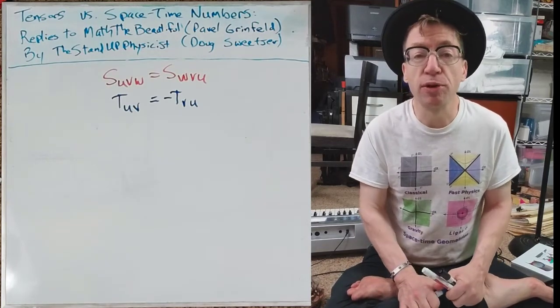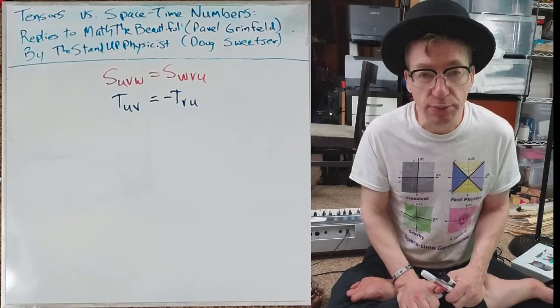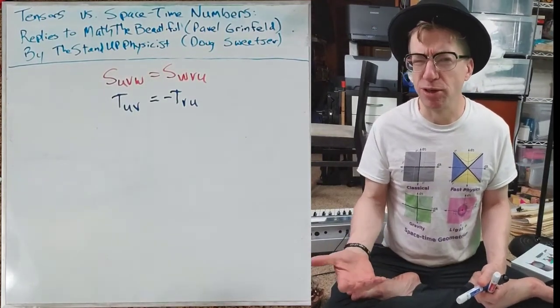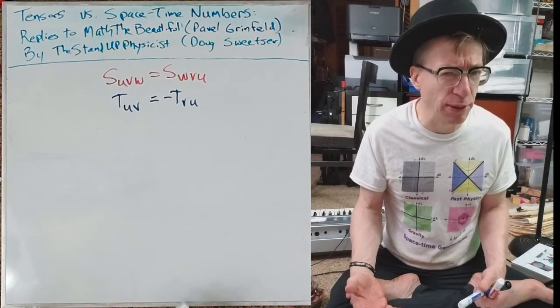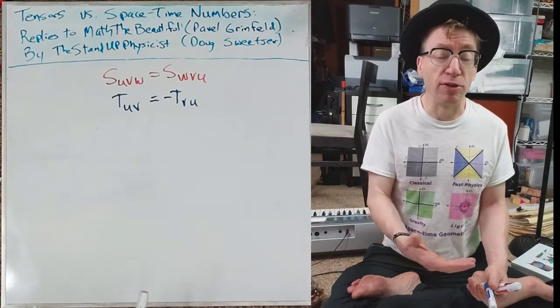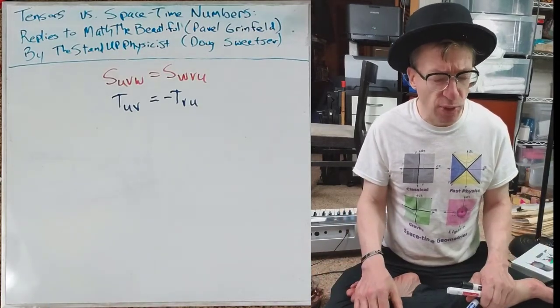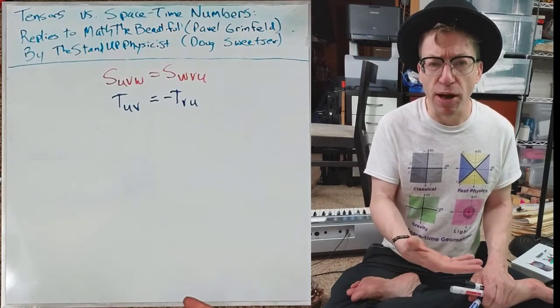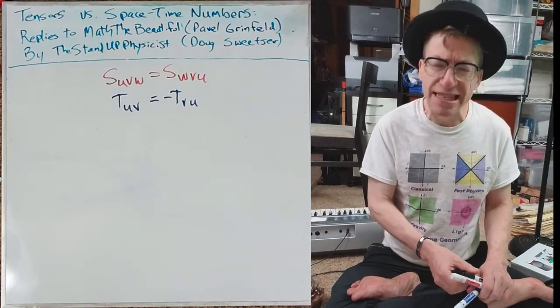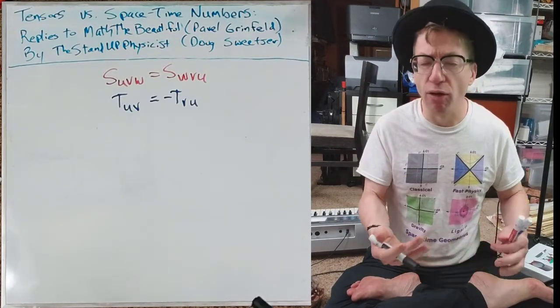So how are we going to do similar things to space-time numbers? Well, we can't use subscripts because they're tensors of rank zero. Would you put a subscript on a real number or a complex number? The answer is no. Those are formally subgroups of space-time numbers, so you can't do it to that sort of thing. So instead, we're going to think about double products and triple products of space-time numbers and see if they behave at all like this.